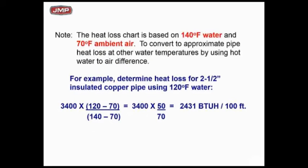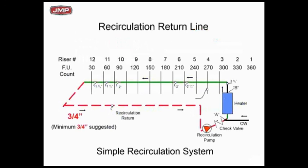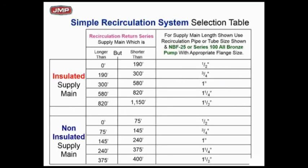This was based on 140°F supply water with an ambient temperature of 70°F. If you have a colder ambient or colder supply water, there's a correction formula. In this particular case, if we drop the supply to 120°F, the BTU heat loss is much, much less. So the chart we showed you is conservative at 140°F. Going back to our example: 300 feet of supply pipe, starting at 140°F at the water heater and ending at 130°F at fixture 12 — a 10-degree delta T — it takes 2 GPM to maintain that.